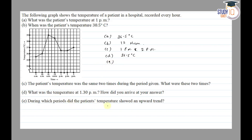Part E asks: during which period did the patient's temperature show an upward trend? We can see an upward trend from 9 AM to 11 AM. Then the temperature decreases, stays the same, and then increases again from 2 PM to 3 PM. So the upward trends are from 9 AM to 11 AM and from 2 PM to 3 PM.